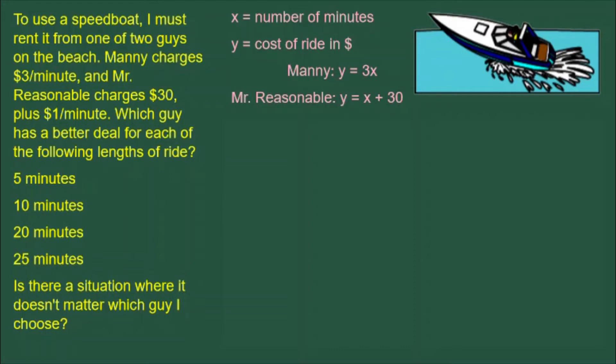I want to rent a speedboat for a little while, even though it's expensive. There are two guys on the beach. Manny charges $3 per minute, and Mr. Reasonable charges $30 plus $1 per minute. Which of these guys has a better deal for each of the following lengths of ride?